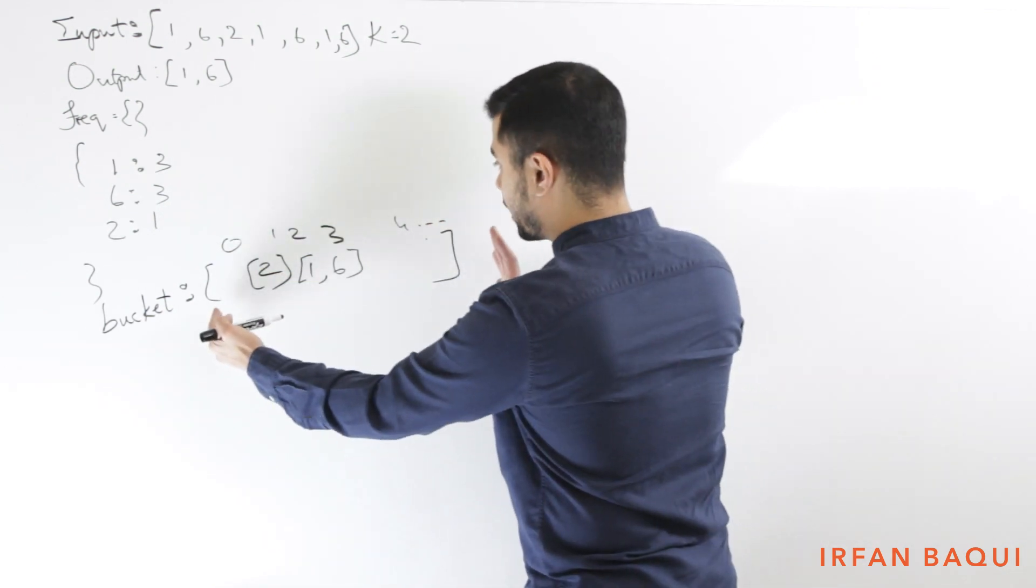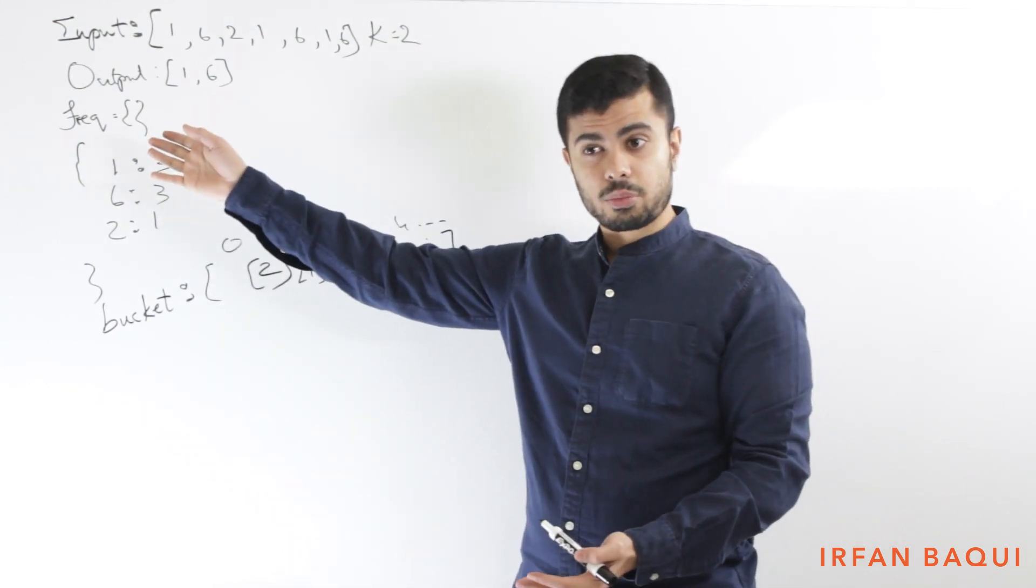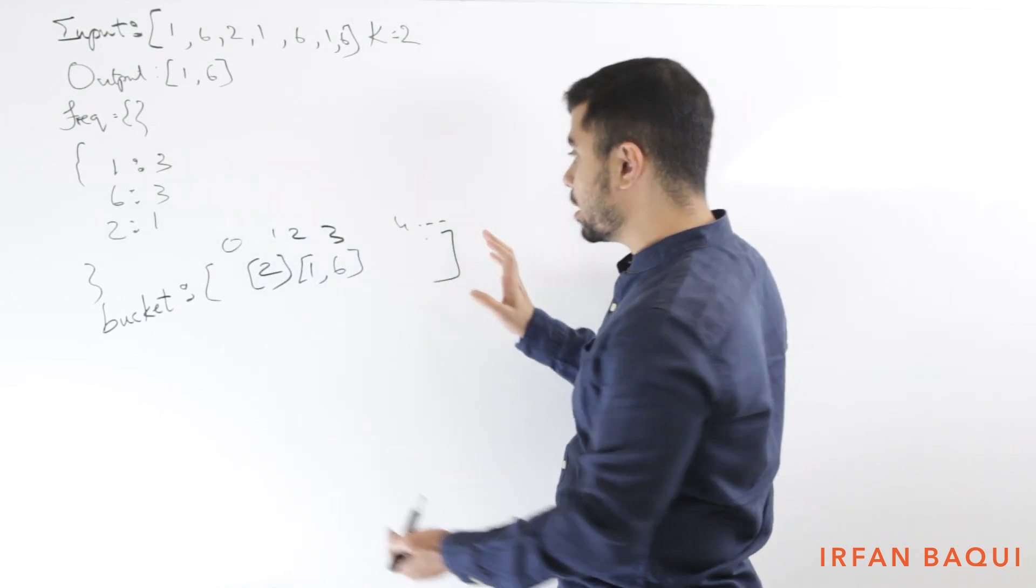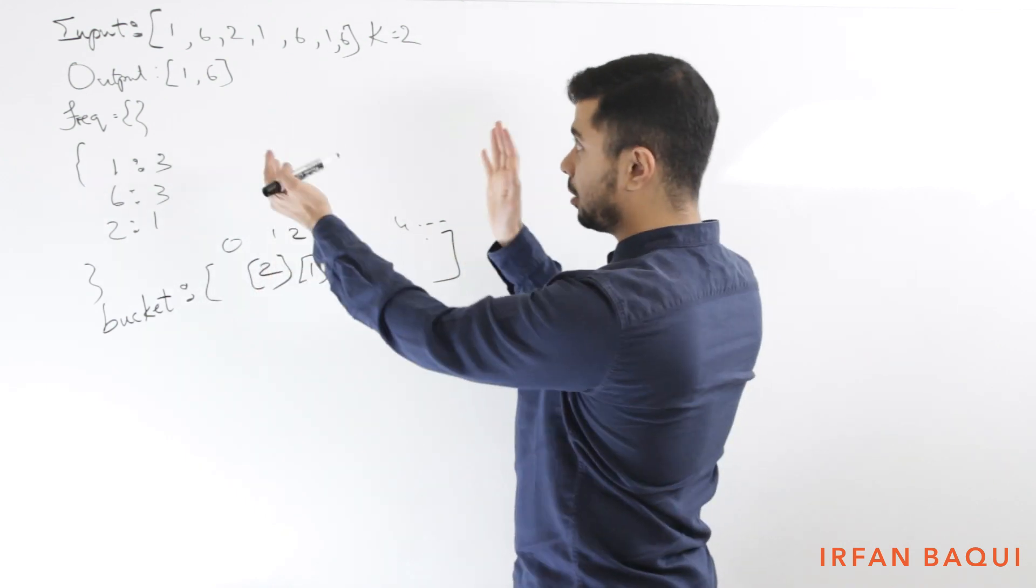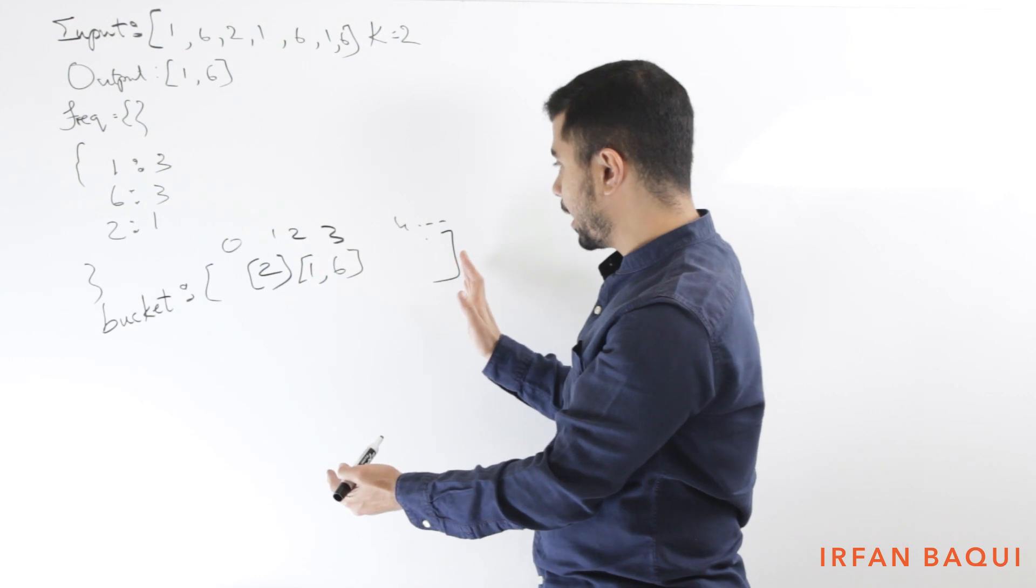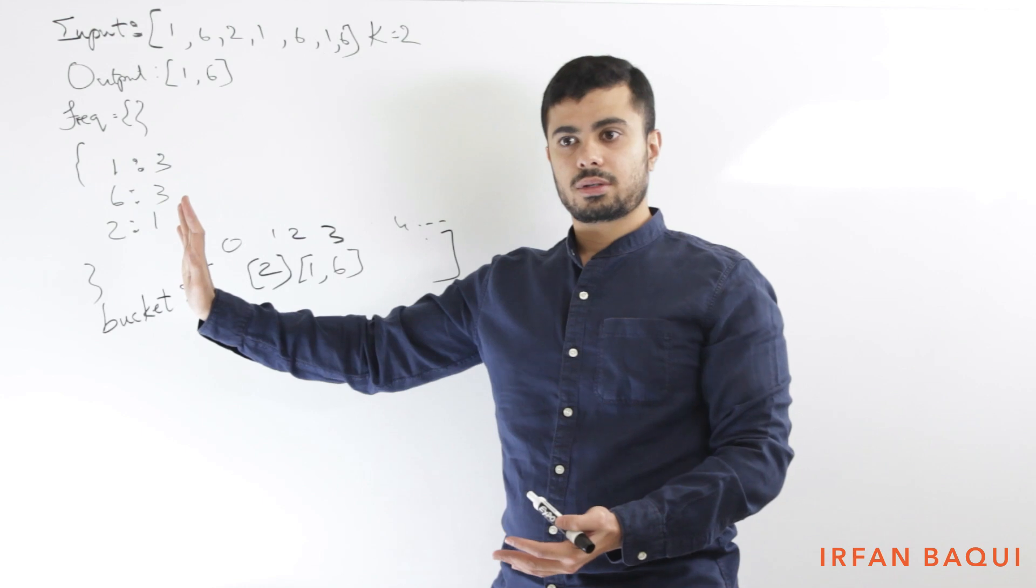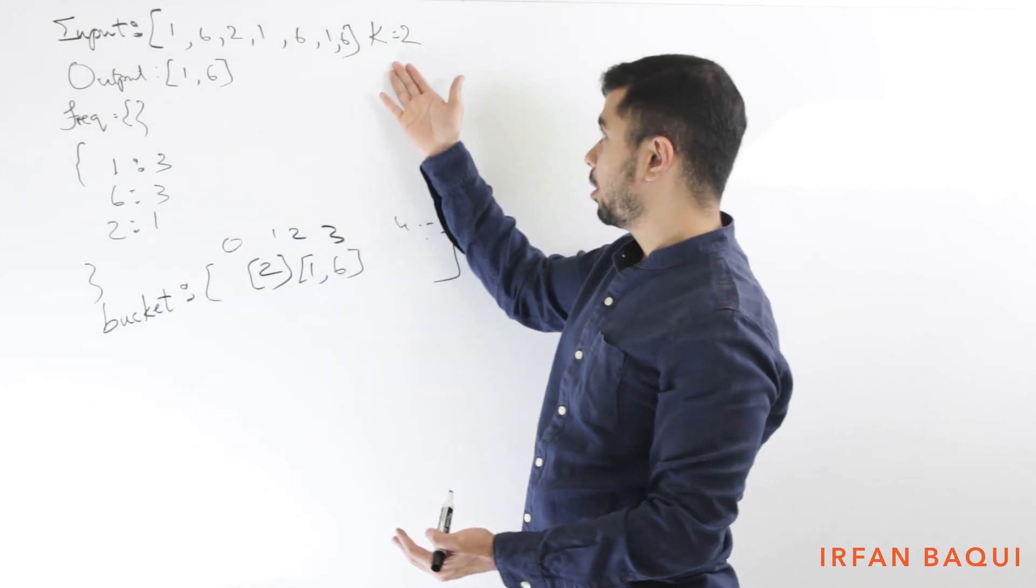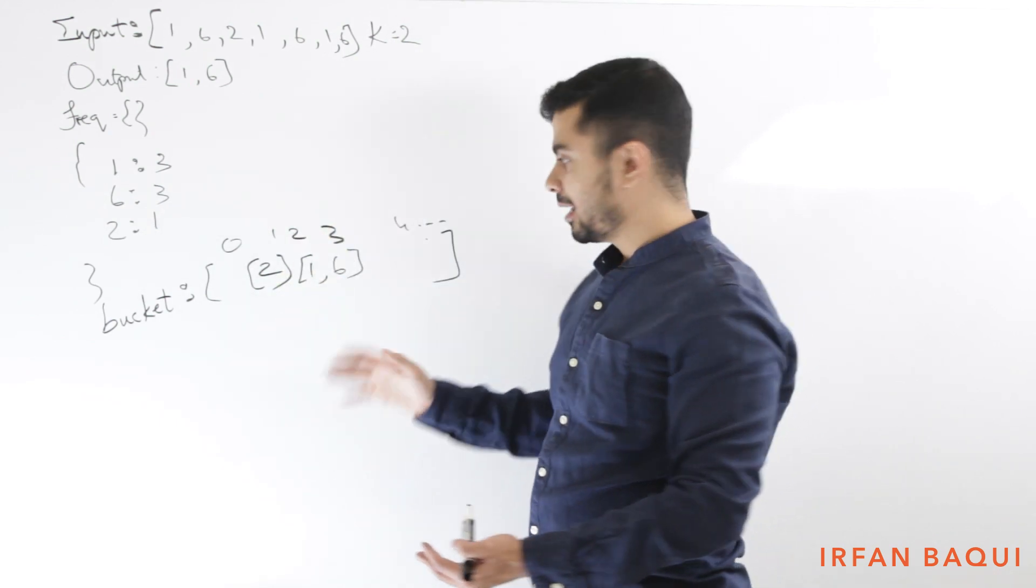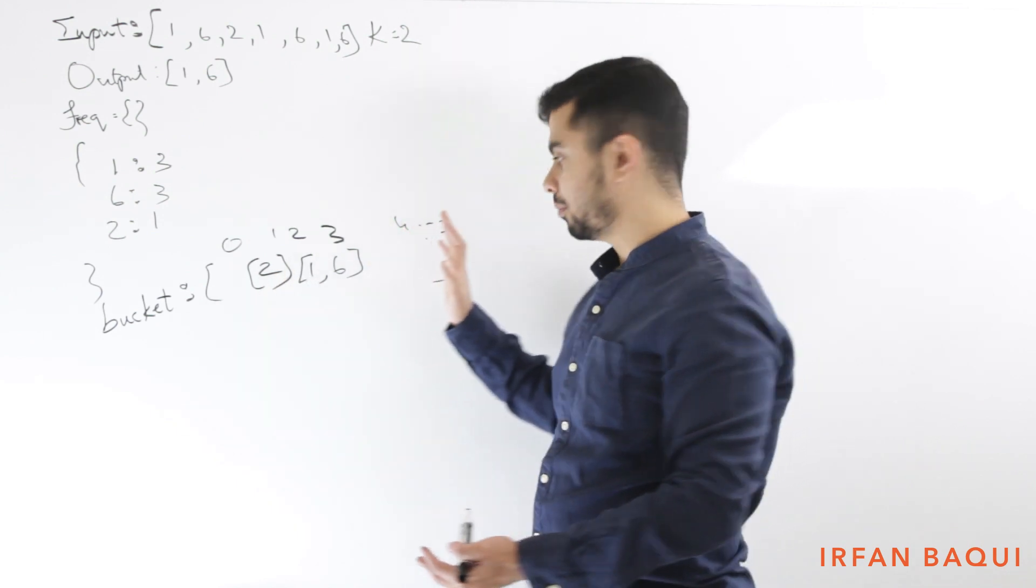So if I have a bucket like this, the maximum length of this bucket will need to be basically the length of the input itself. So I can initialize this from the start as a length of the input plus 1, like we discussed. And I can iterate from the end upwards.